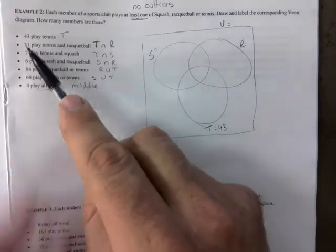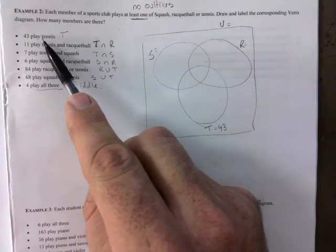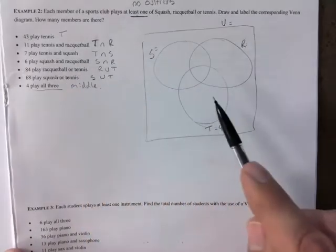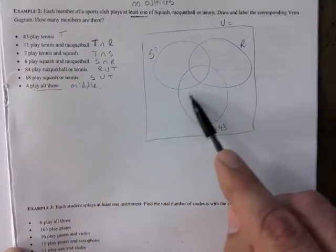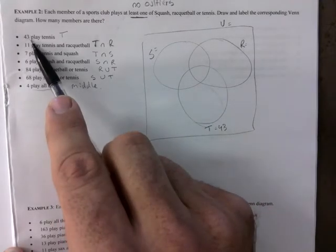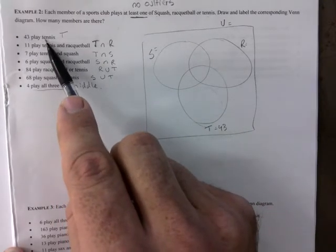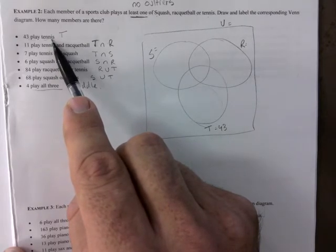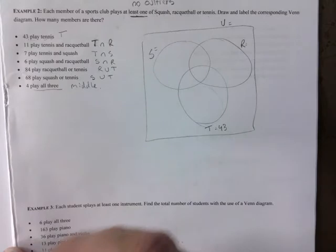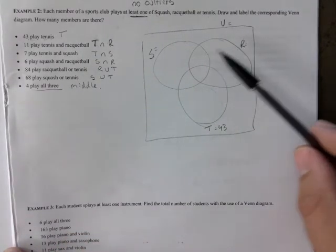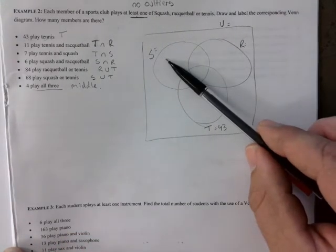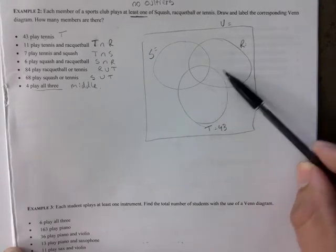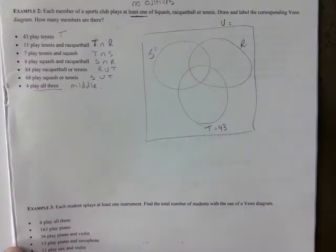If it had said, folks, 43 play only tennis. Only tennis. Then that is code for here. Goes in this section right here. Or if it would say 43 play tennis and racquetball, but not squash. You hear what I'm saying? Tennis and racquetball, but not squash. Where would that go? That would only be in here. So it's these two, but not that one. You got to watch out.